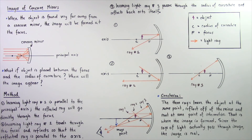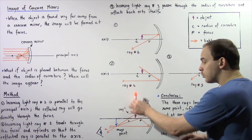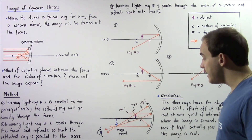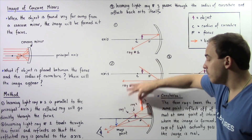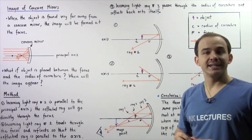So let's look at our conclusion. The three rays of light leave the object at the same exact point, reflect off of the mirror, and meet at a point of intersection — that is where the image is formed, and this is known as the image point. Since the rays of light actually pass through the image point, the image is real. Notice the object is upright, but the image is not upright — it is inverted, meaning it will appear upside down.